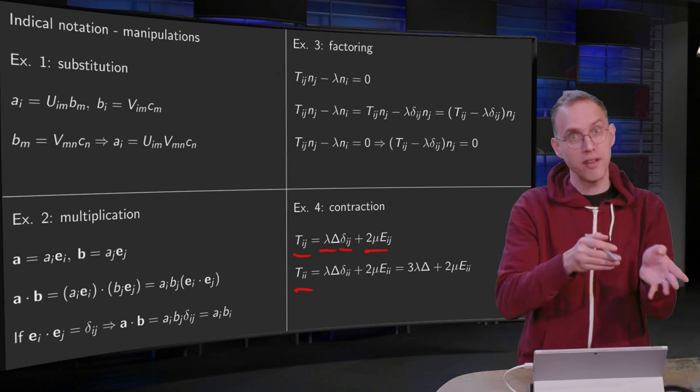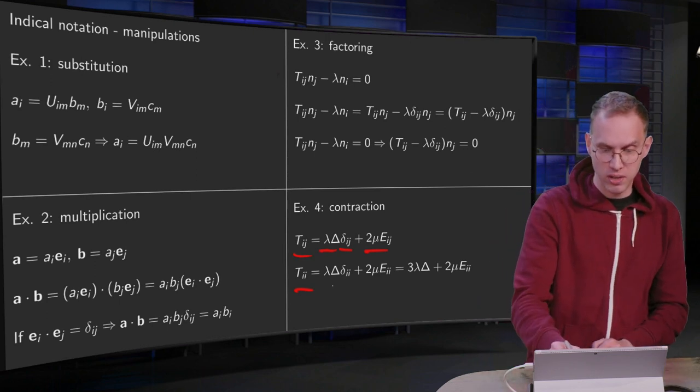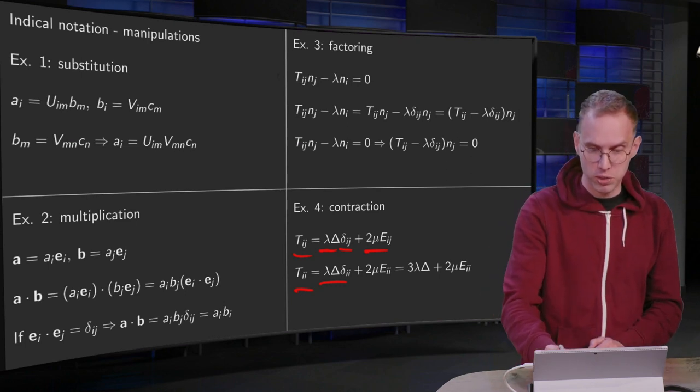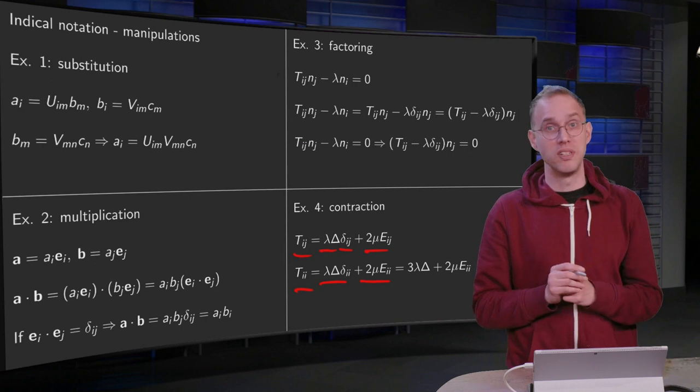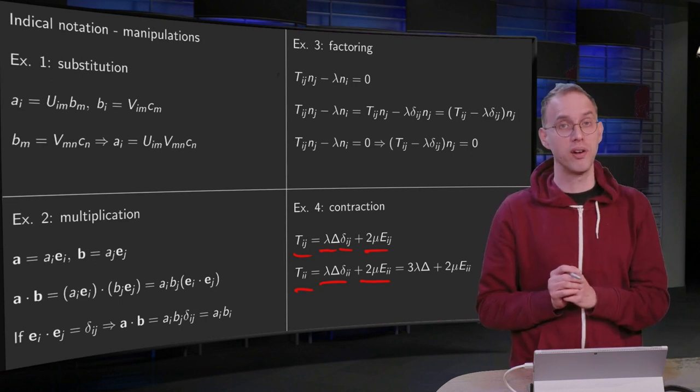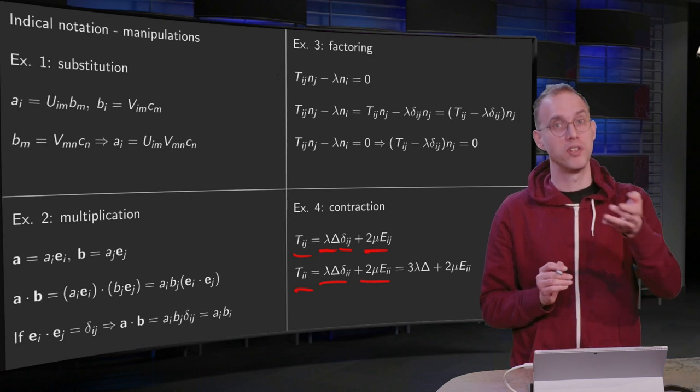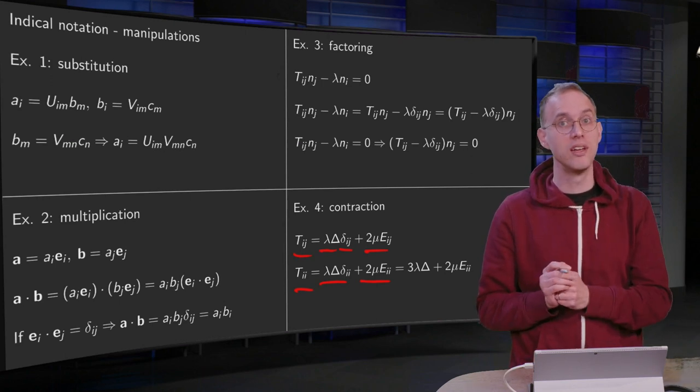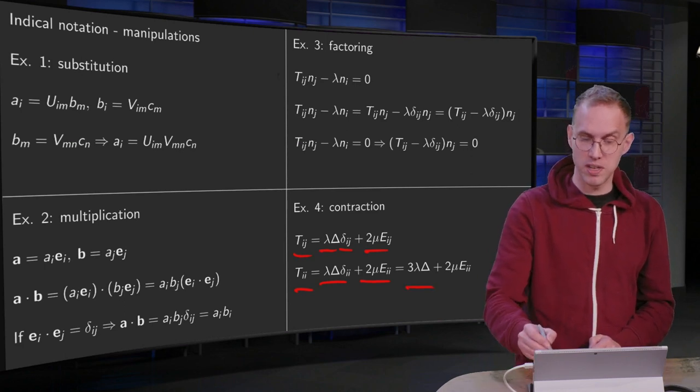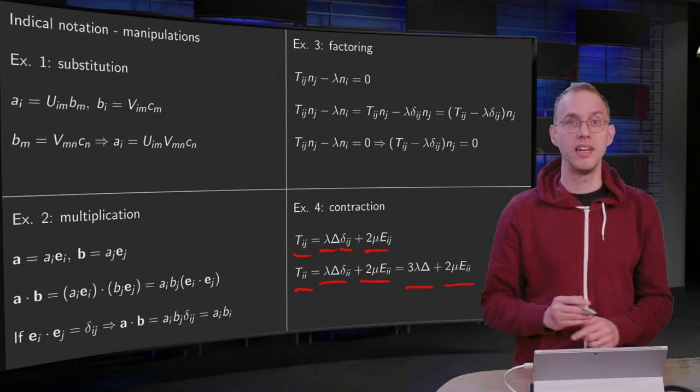So you get lambda delta times delta_ii plus two times mu times E_ii. Well, cannot do that much with the E_ii. But the delta_ii, we have seen before what it is. It is delta_11 plus delta_22 plus delta_33, so that gives us three. So you end with three times lambda delta plus two times mu times E_ii.